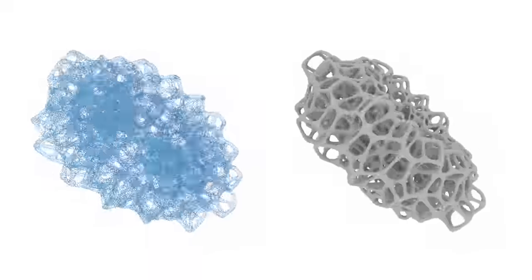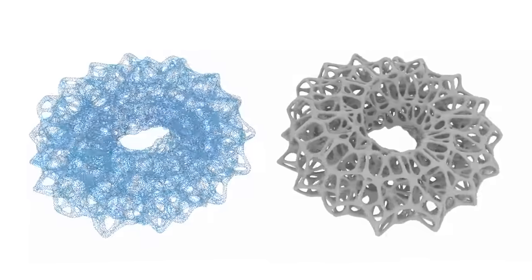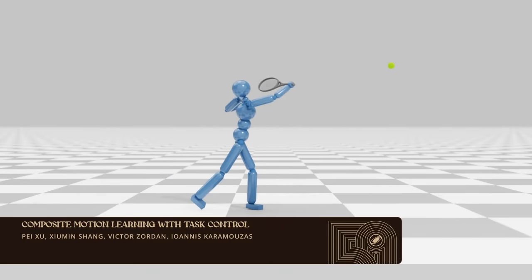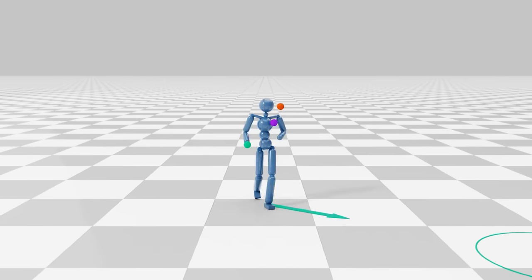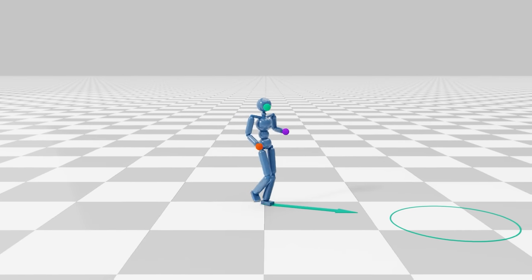This enables downstream applications like meshing these complex sponges. Or spend the time helping virtual characters find new work as tennis pros or jugglers, by learning from multiple reference motions.